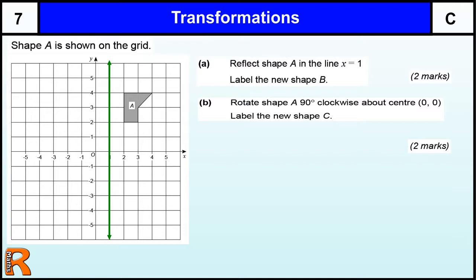So we're going to reflect in that line there. Now when you're reflecting a shape, this is quite a nice one because it's vertical, all you need to do is think about each point, how far is it away from the line at right angles and put it on the other side the same distance.